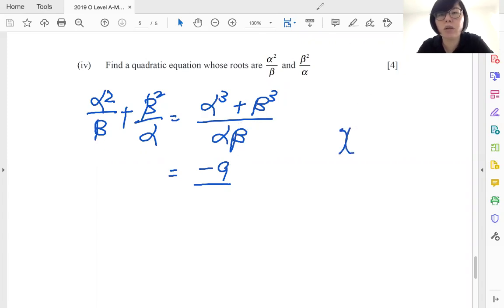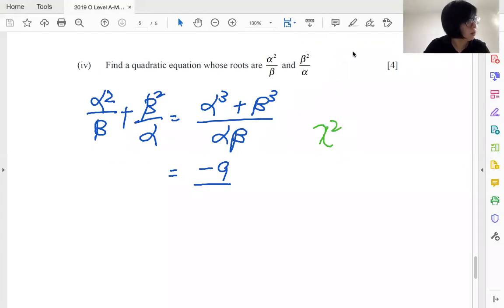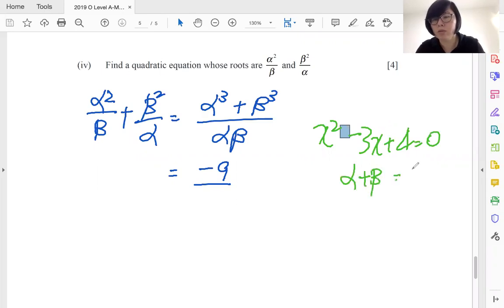And the product of the roots. All right, so what was the equation? It was x square. Okay, let me use a different color. Okay, it was x square minus 3x plus 4 equals to zero.